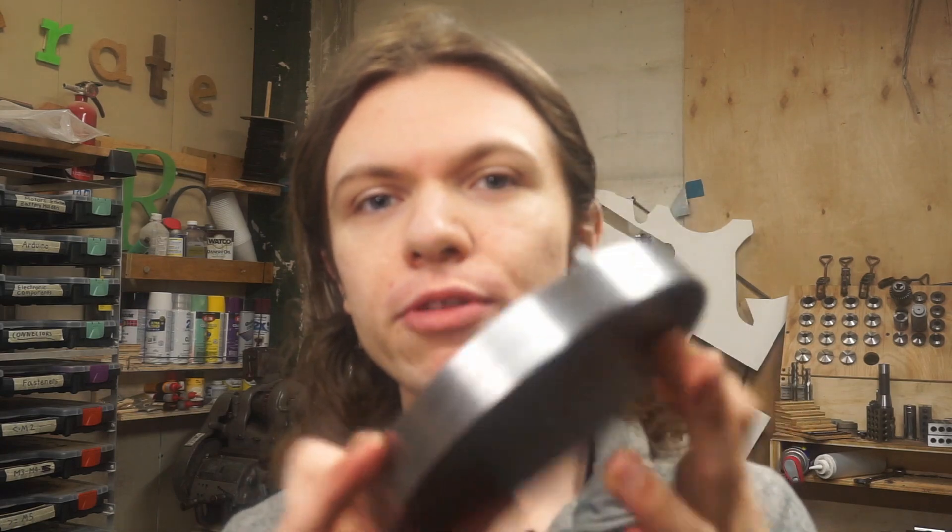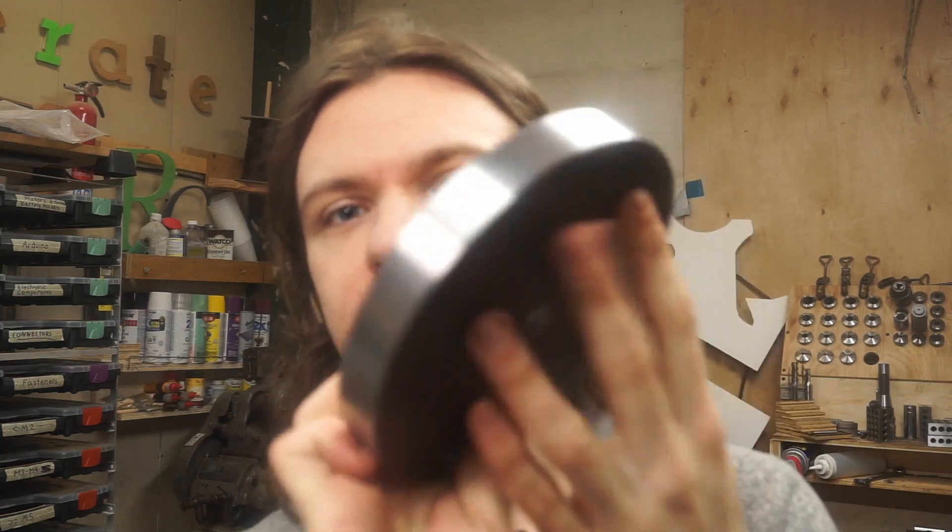Okay, so here's the first disc, roughed into size. Now the next step is I need to somehow carve gear teeth around the outside of this disc. And going into this project, I really didn't know how I was going to do that. So like I normally do, I did some research online.